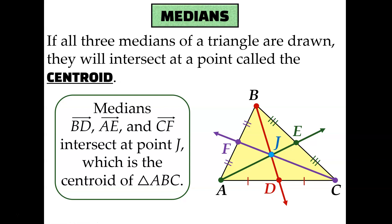Just like the other segments in this lesson, medians are also concurrent, which means that if you draw all three medians of a triangle, they will always intersect at one particular point, and we call that point the centroid.